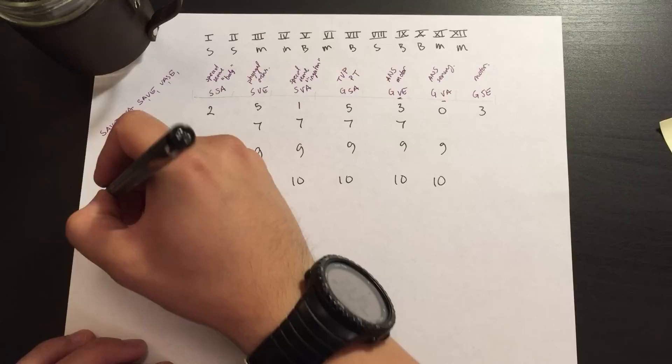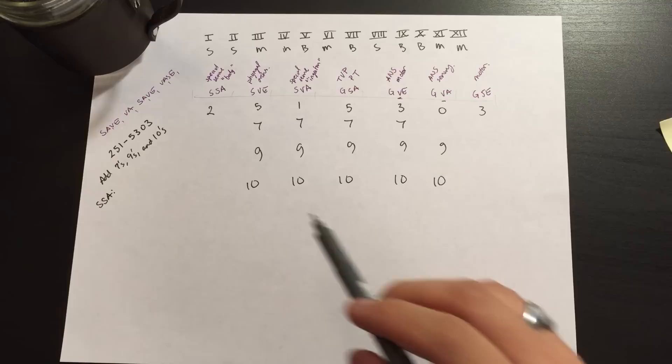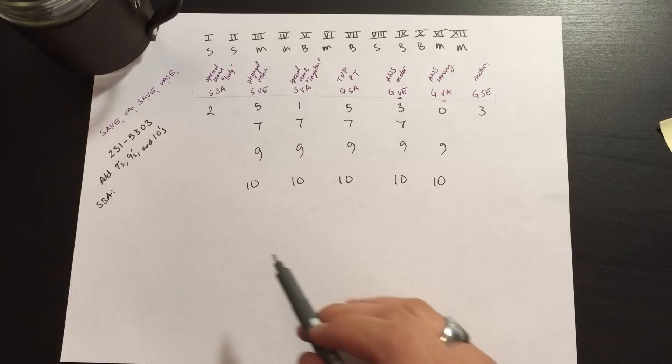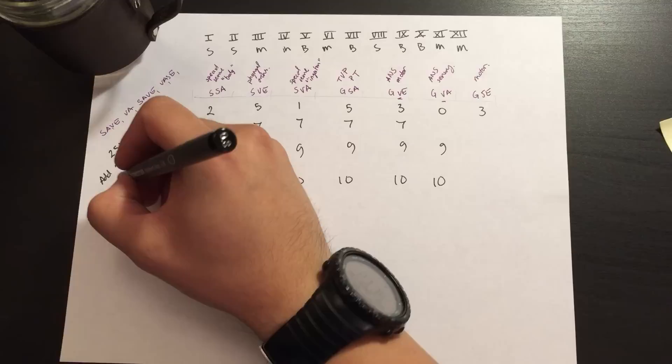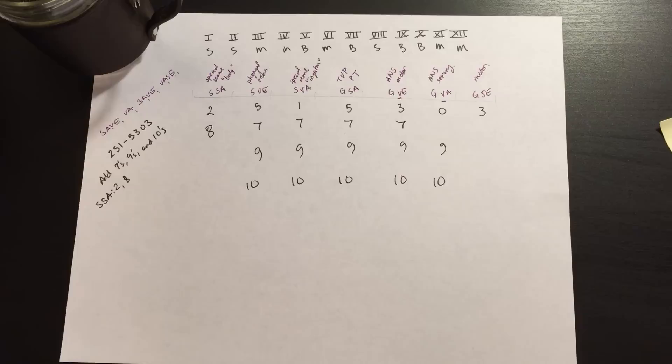All right, so first I want to take a look at the SSA fibers. That is our special somatic afferents. I've mentioned before that this is our vision, balance, and hearing. So here's our vision with cranial nerve two, and our balance and hearing is found in cranial nerve eight, vestibulocochlear. So I'll put 8 there.